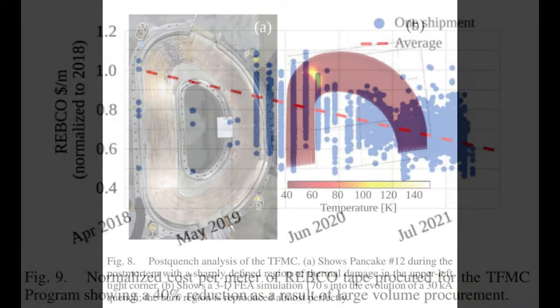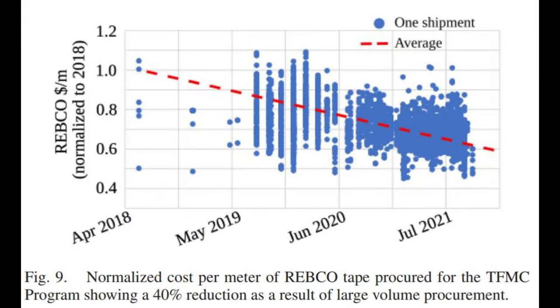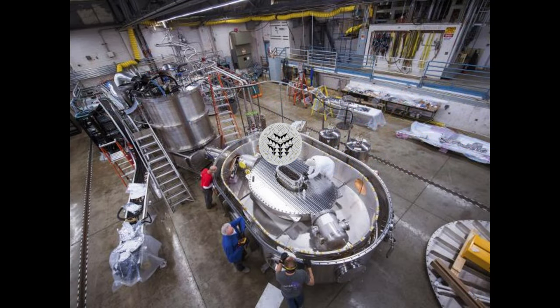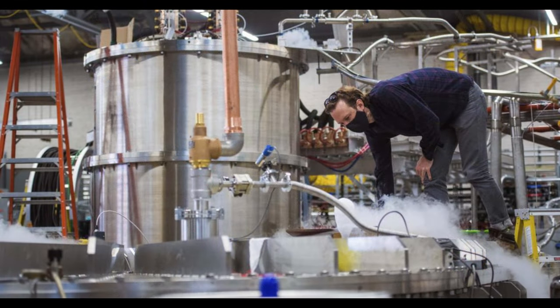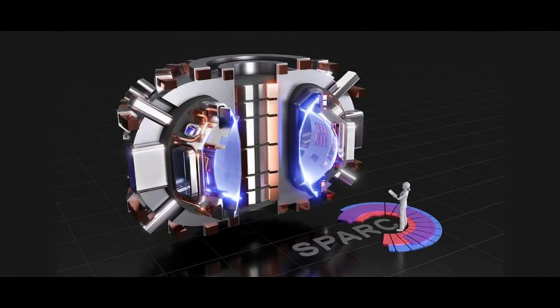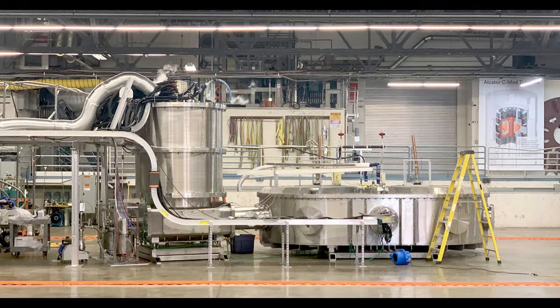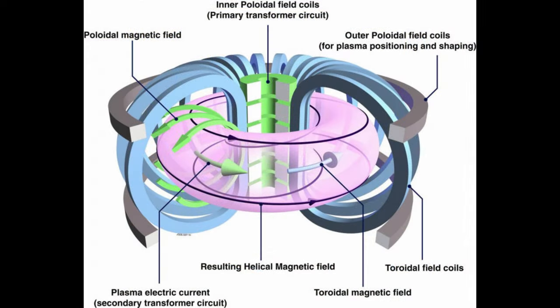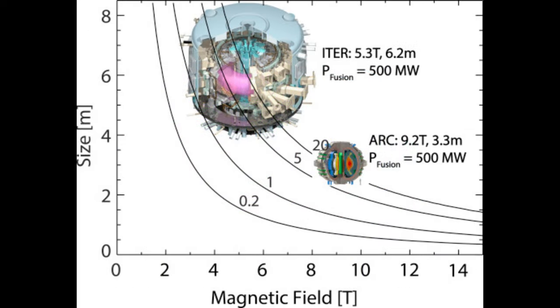The test program had a specific objective, according to Hartwig. He explains that one of the goals was to deliberately extinguish a magnet of full-scale proportions. This was done in order to obtain essential data under the appropriate circumstances and dimensions, which would contribute to the advancement of scientific knowledge, validation of design codes, and analysis of the magnet's failure. The subsequent step involved disassembling the magnet to investigate the causes and determine the necessary improvements for future iterations. Hartwig concludes that the test was highly successful in achieving its objectives.